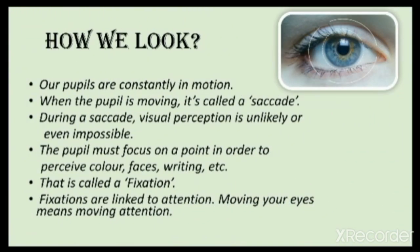How do we look? Our pupils are constantly in motion. When the pupil is moving, it's called a saccade. During a saccade, visual perception is unlikely or even impossible.